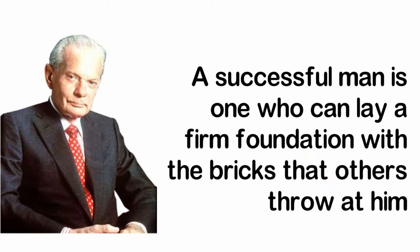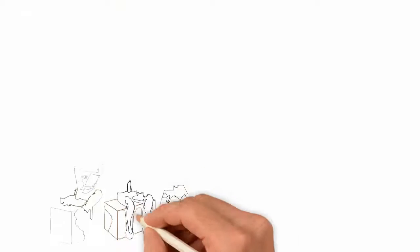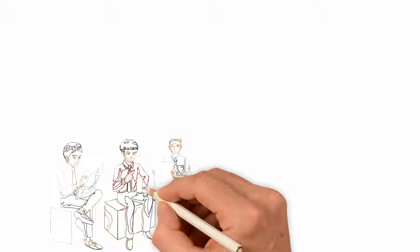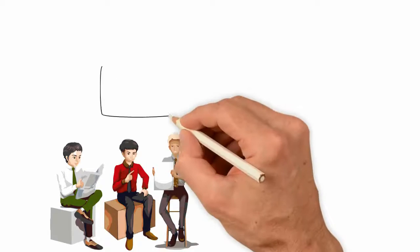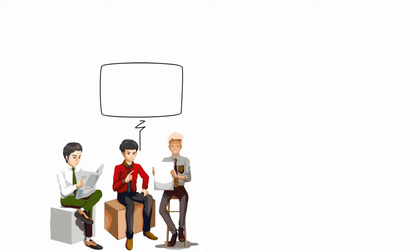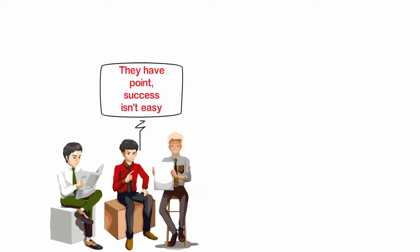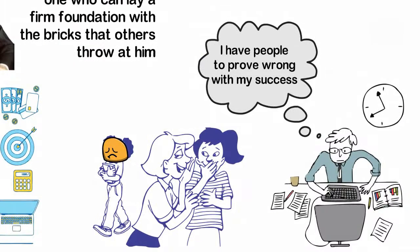What most people do is to allow the bricks others throw at them to cause them injuries. What most people do is to believe that what others say about them is the truth. What most people do is to allow the negativism around them to get into them. The opposite of this is what successful people do. Successful people simply use the negativism around them as a stepping stone.